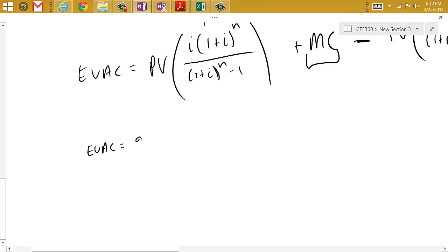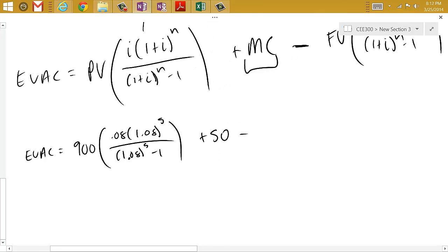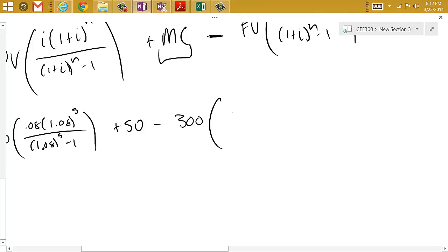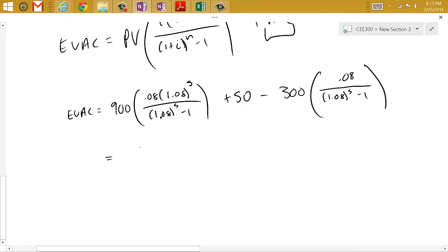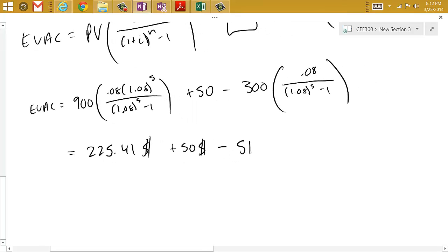So EUAC is going to be 900 times 0.08 times 1.08 to the 5th over 1.08 to the 5th minus 1, plus 50, minus 300 over 1.08 to the 5th. So after you do these calculations, you'll find out that this equals $225.41 plus $50 minus $51.14,